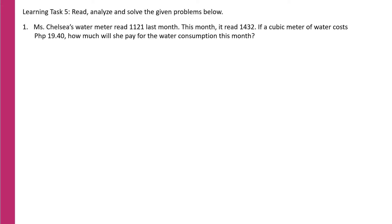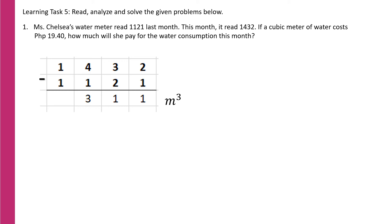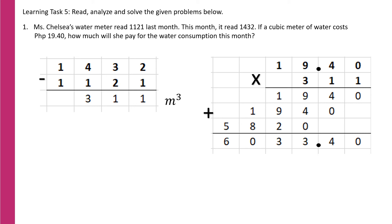Learning Task 5, Problem 1: Miss Chelsea's water meter read 1121 last month; this month it read 1432. If a cubic meter of water costs 19 pesos and 40 centavos, how much will she pay this month? We subtract the previous reading from the present: 1432 minus 1121 gives 311 cubic meters. Multiplying 311 by 19.40, the answer is 6,033 pesos and 40 centavos.